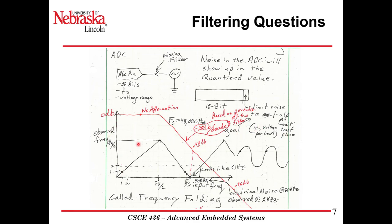This shows those frequencies overlaying each other. I have my observed frequency, Fs over 2, and amplitude versus frequency. If I have an observed frequency of say 2 kHz, it's going to repeat at the other harmonics. At the sampling frequency it will look like zero hertz. So at 2 kHz with a 48 kHz sampling frequency, we're going to have signals at 50 kHz that exist at 2 kHz. For example, fluorescent lights might be observed at 50 kHz, and we'll see that noise again at 2 kHz.